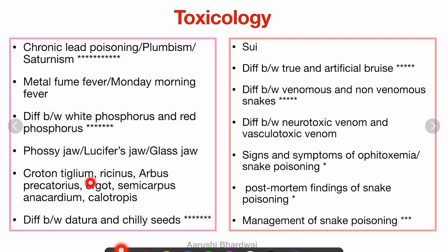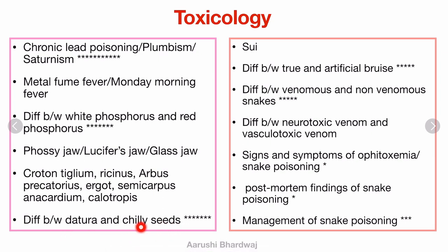Croton, Abrus precatorius, Semicarpus anacardium, Calotropis — these are all plant poisonings. You have to know the image, the active principle, and the medical-legal importance — these are the three things you need to know, because they are asked a lot in the FMT practical as spotters. Please look at their images, their active principles, their medical-legal importance.